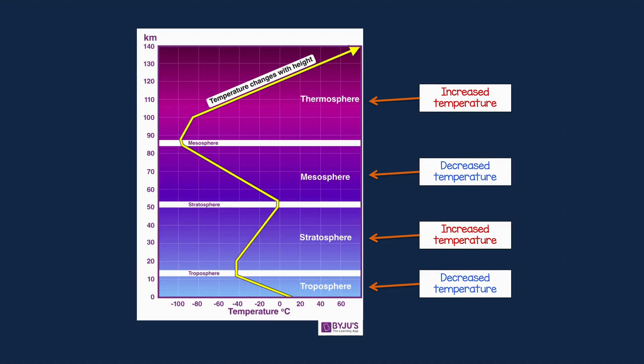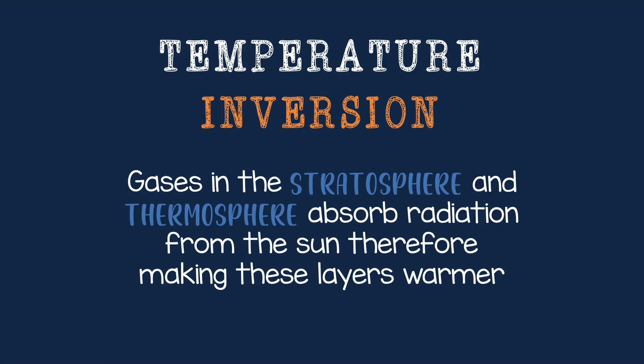This graph is really important. It shows us the temperature on the bottom axis and the kilometers above sea level on the left-hand side. In the troposphere the temperature decreases, reaching around minus 40 degrees; in the stratosphere it starts to increase; in the mesosphere it decreases again; and in the thermosphere it increases again. Those two layers where the temperature increases instead of decreases are said to have a temperature inversion. The reason is that the stratosphere and thermosphere contain specific gases that absorb radiation from the sun, making those layers warmer instead of cooler.